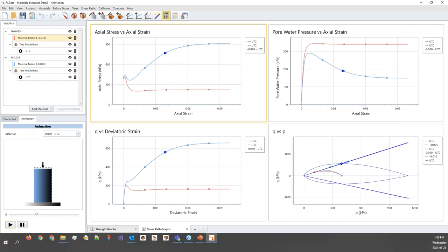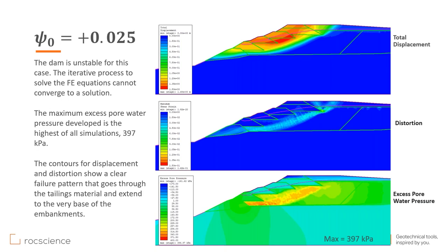We will look at the effect of these parameters on the stability of a couple of examples. This one looks at the tailing material being at the looser state, where you see generation of large excess pore water pressure, causing instability in that region. These are contours of distortion, which is an indication of failure surface, and also total displacement. We are working on the examples to present in that webinar. I'll pass it back to you, Reginald, for today's webinar.